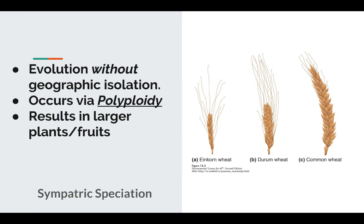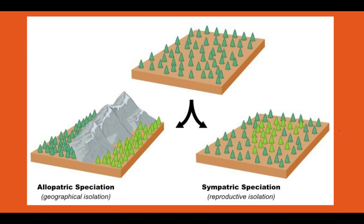Sympatric speciation involves no geographic isolation. What happens here is mostly polyploidy. The majority of organisms are diploids — for example, humans have 46 chromosomes, 23 from mom and 23 from dad. A lot of polyploidy has been done by humans deliberately. Fruits like strawberries, bananas, and even wheat are examples of polyploidy, and a polyploid organism produces more grain, for instance. So it can occur through human intervention, but we can also see it happen naturally.